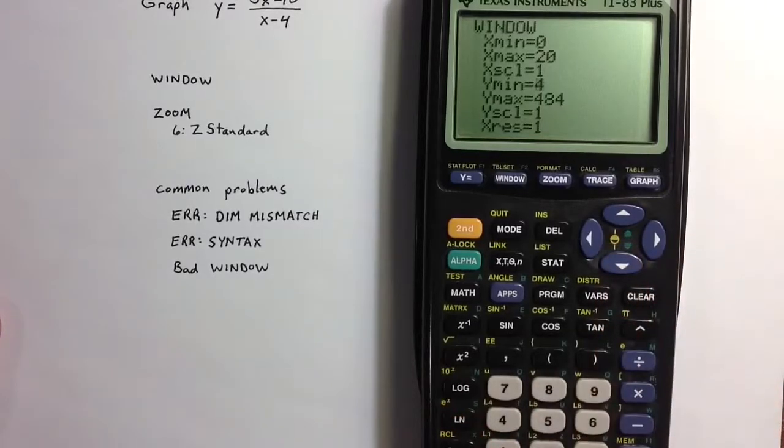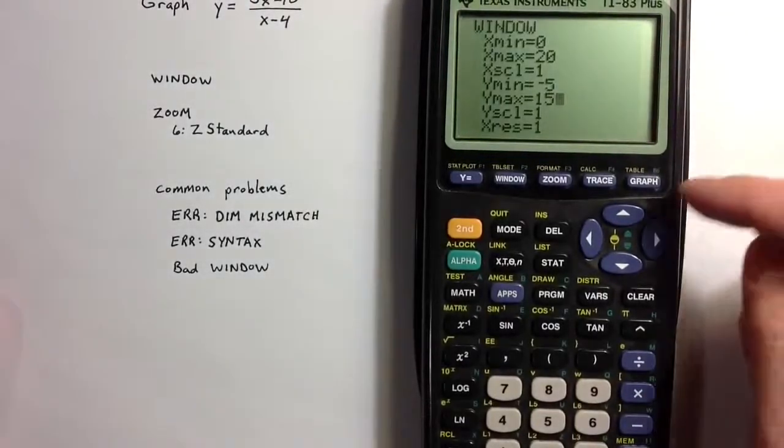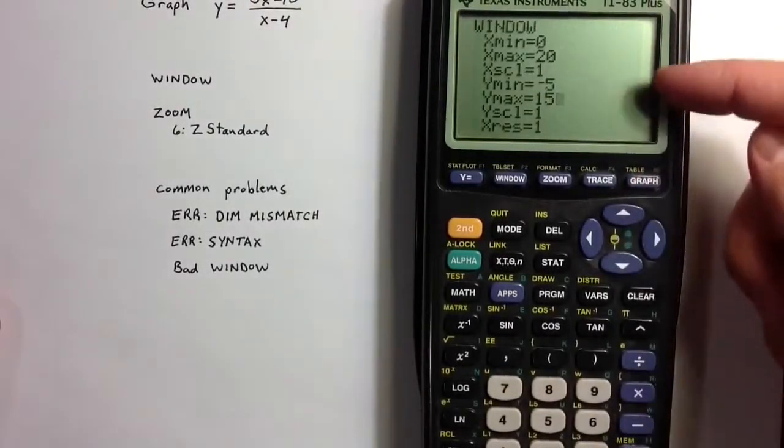And then have a more standard, well, negative 5 to 15 might be a good choice, because it's a parabola, so it's going to be above the x-axis, a parabola that opens upward.